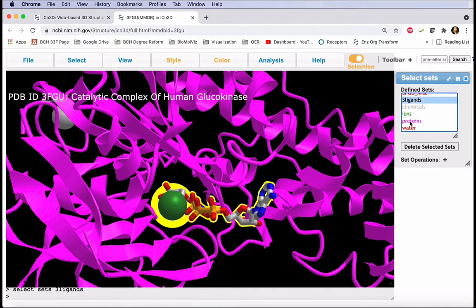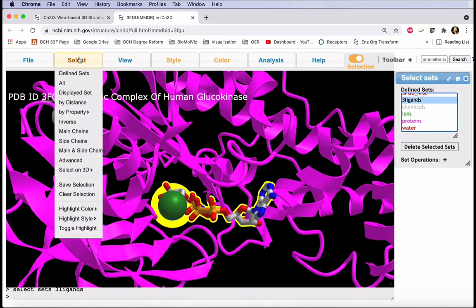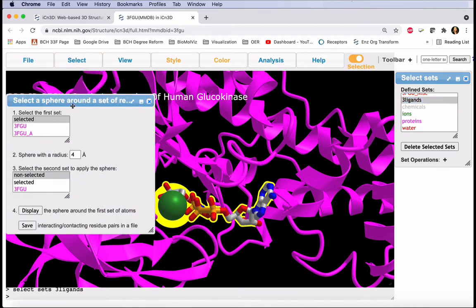Now with the ligands selected, we want to define a sphere of five angstroms around them. In the Select menu, Select by Distance, and in this pop-up menu we'll leave this as Selected since all of our ligands are selected. Adjust this to five angstroms and find the non-selected residues.